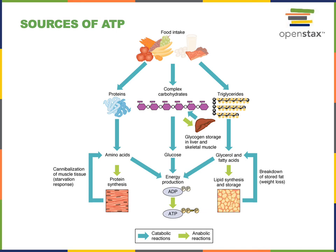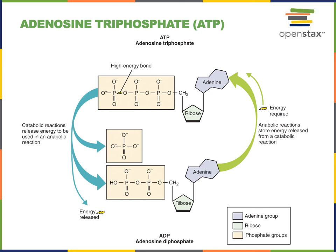ATP stands for adenosine triphosphate. ATP contains three phosphate groups held together by high-energy covalent bonds. ATP hydrolysis releases one of the phosphate groups as an inorganic phosphate, producing adenosine diphosphate or ADP. ATP synthesis converts ADP and inorganic phosphate back into ATP. Catabolic pathways provide energy used to drive the endergonic chemical reaction of ATP synthesis, and then the hydrolysis of ATP releases energy that can be used to drive anabolic pathways.